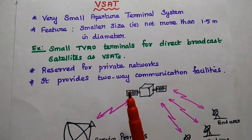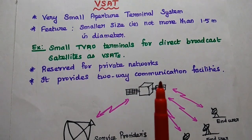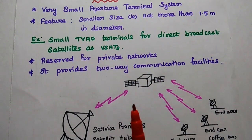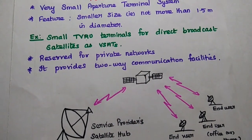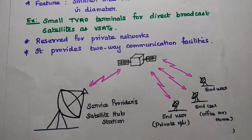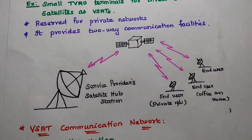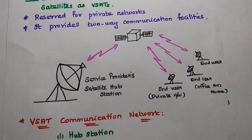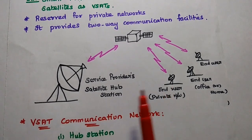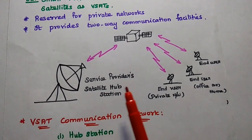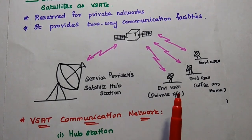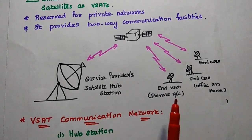V-SAT is mainly used for private networks and also provides two-way communication facilities. The basic structure of the V-SAT communication system consists of two important sections: one is the Service Provider's Hub Station, and the next one is the V-SATs.